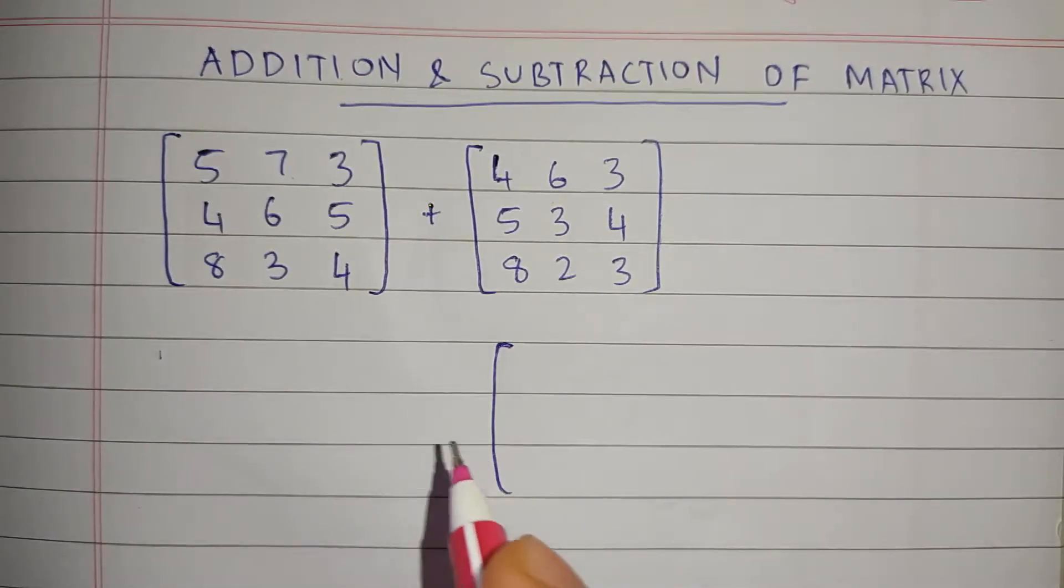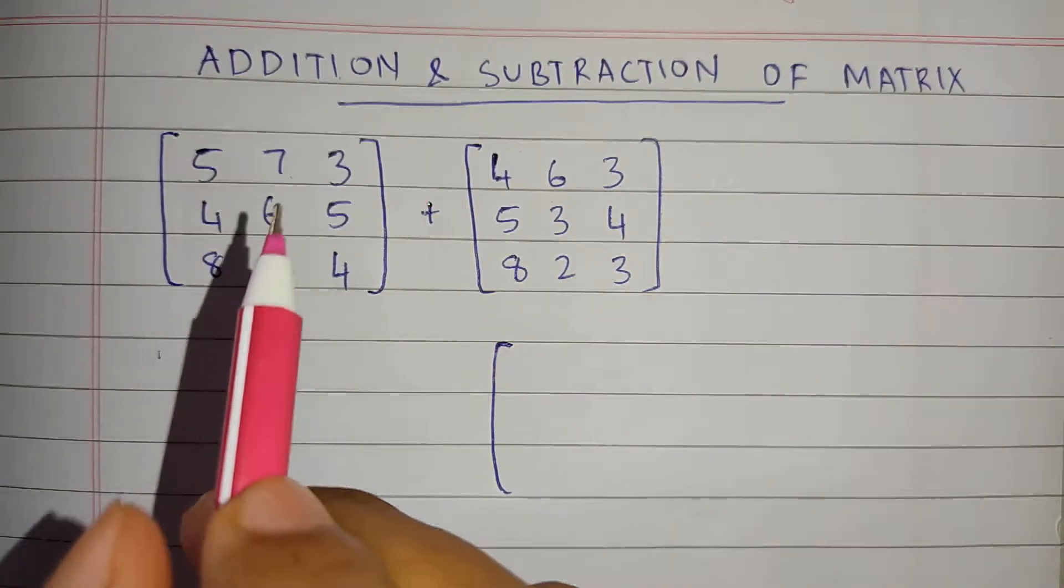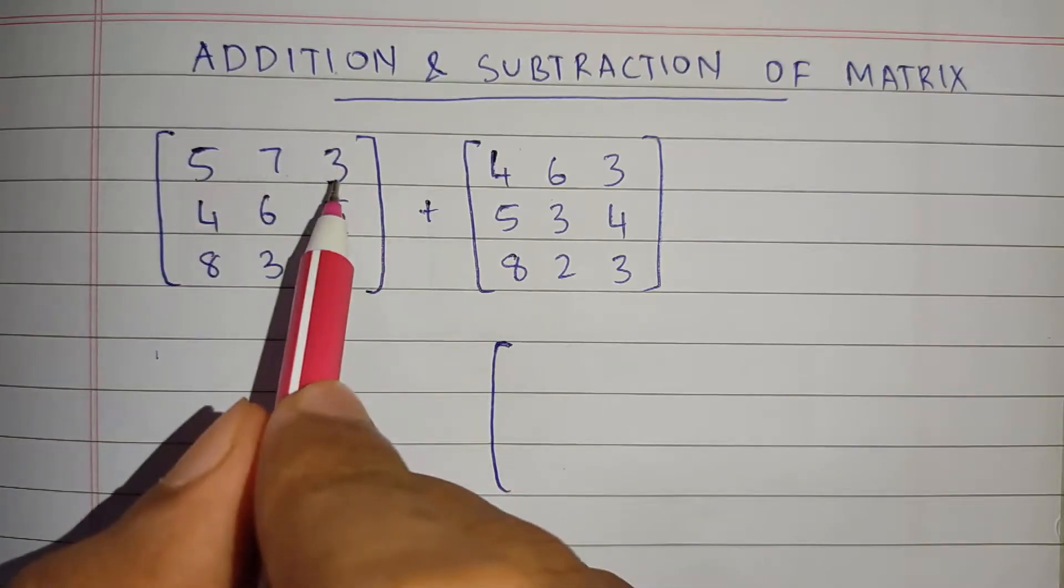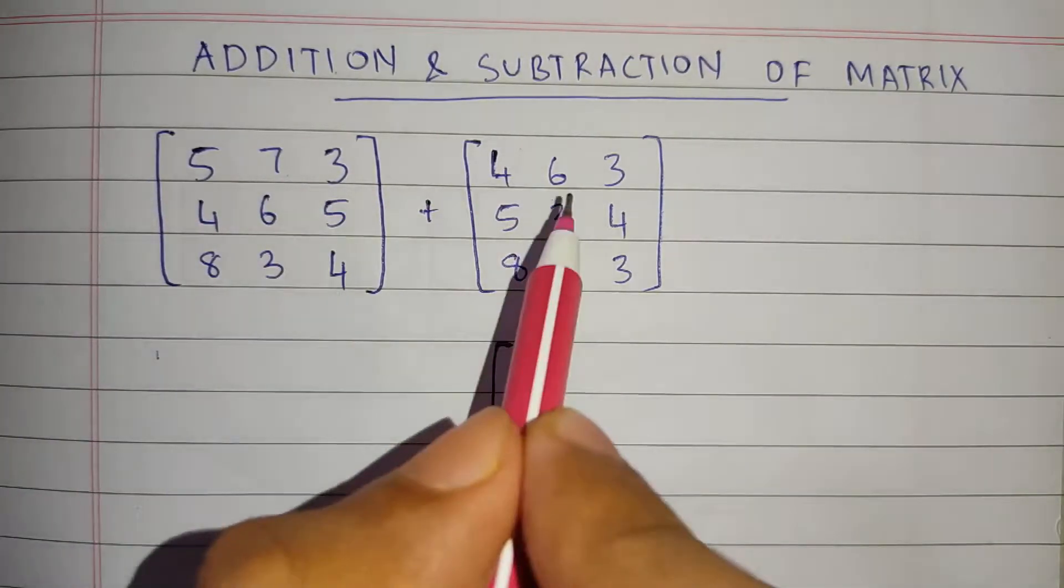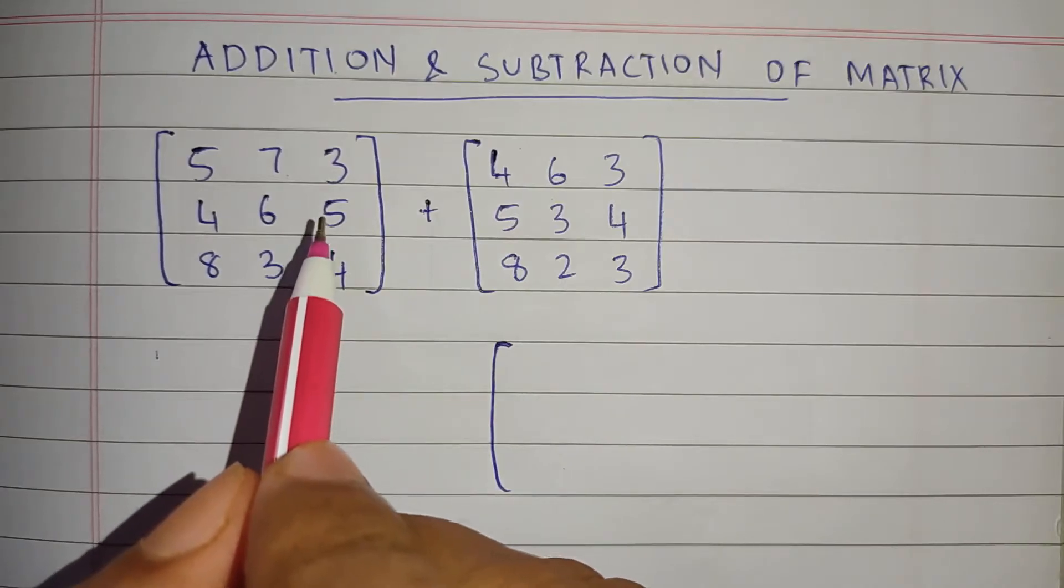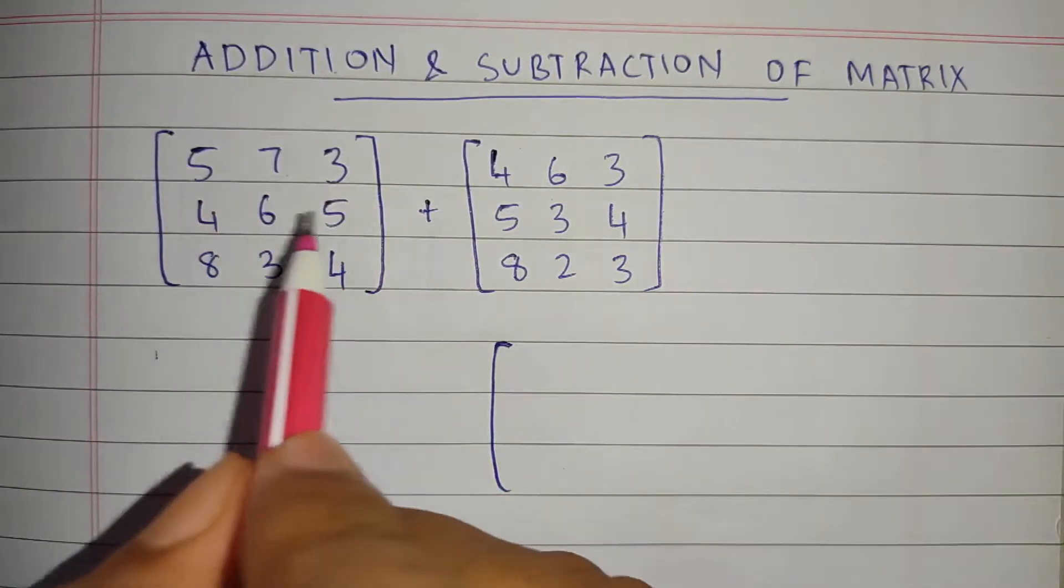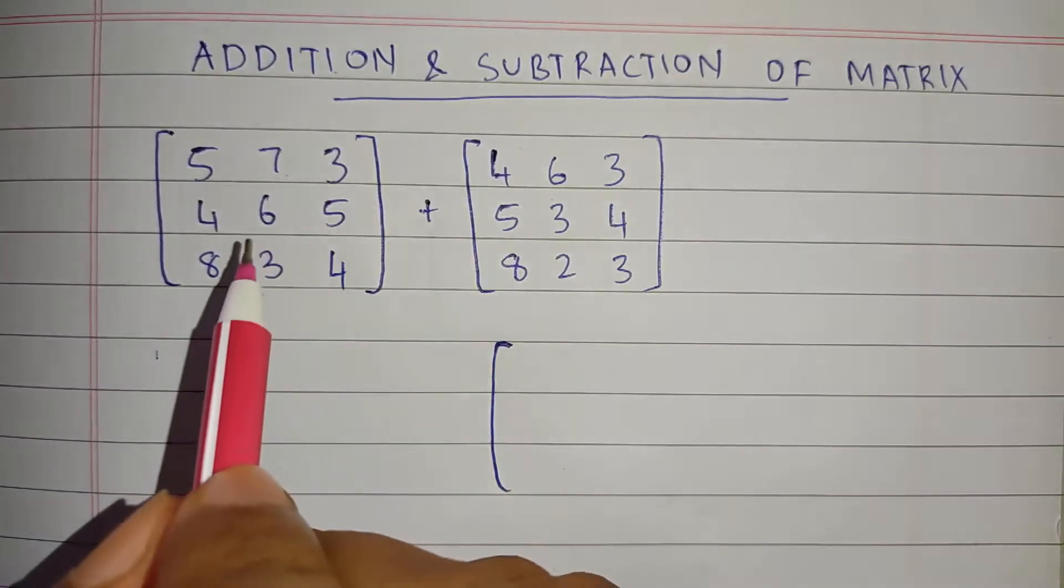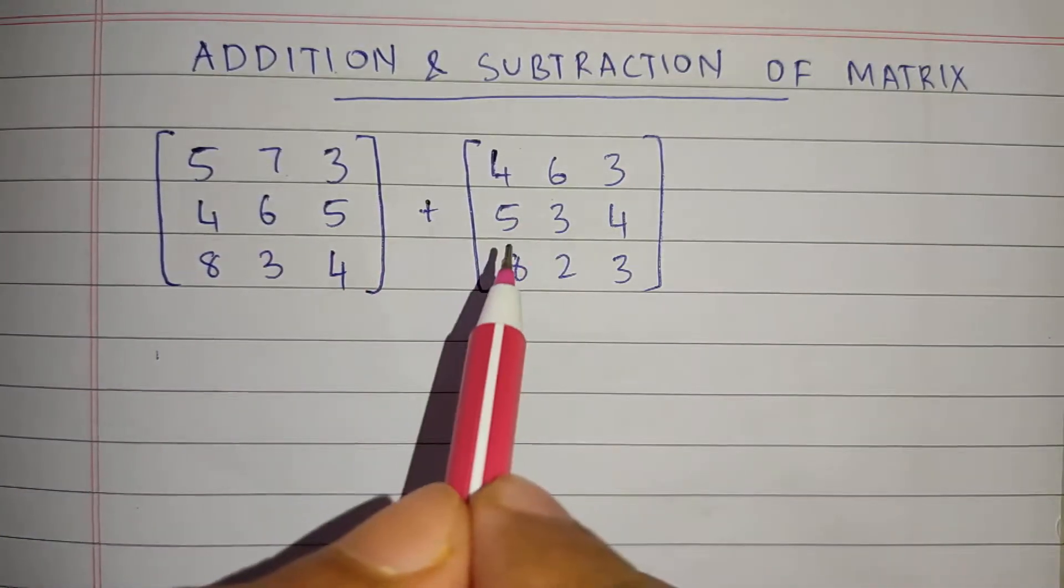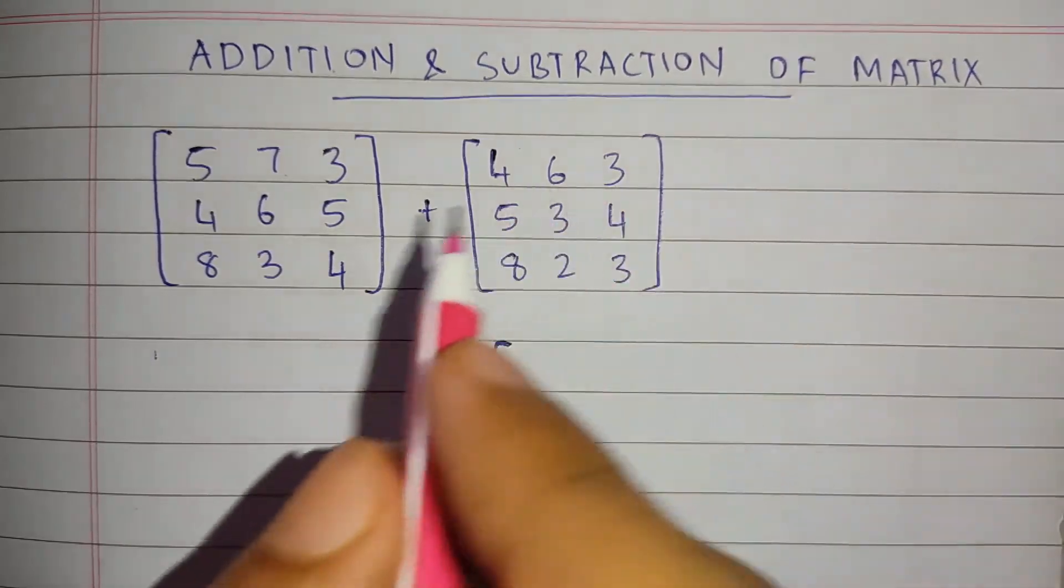First, we need to check if the number of rows and number of columns are equal in both matrices. Then only we can do the addition and subtraction. Otherwise, if the number of rows and columns are different in both matrices, we cannot add or subtract the matrices.